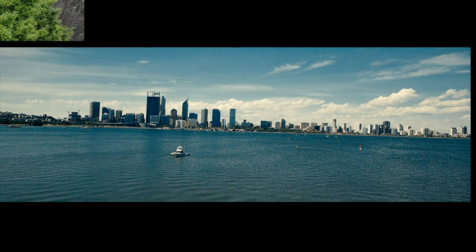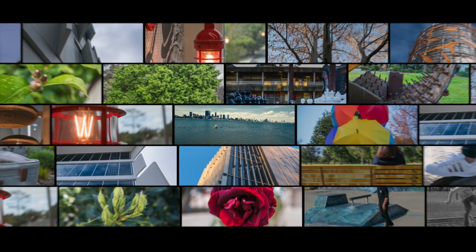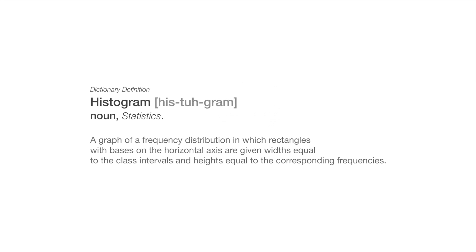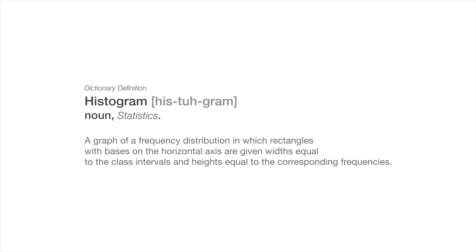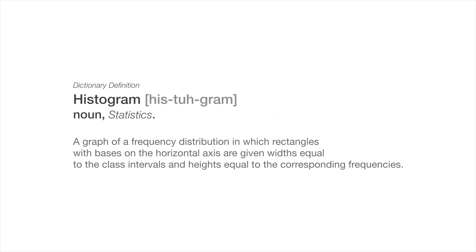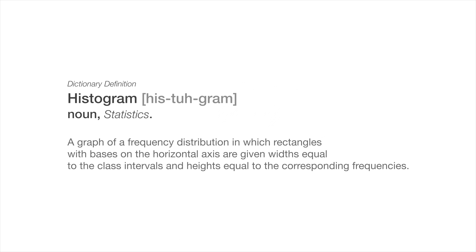Hey guys, in today's video we're going to be talking about what histograms are in digital imagery, how to understand them, as well as how to take full advantage of them. A histogram is a graphical representation that organizes a group of data points into specified ranges. Data points are grouped into logical ranges and represented on a simple bar chart-like visual.